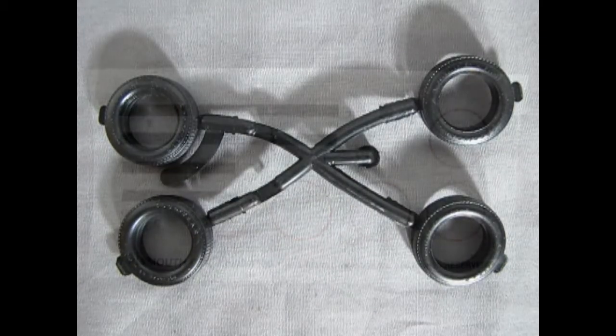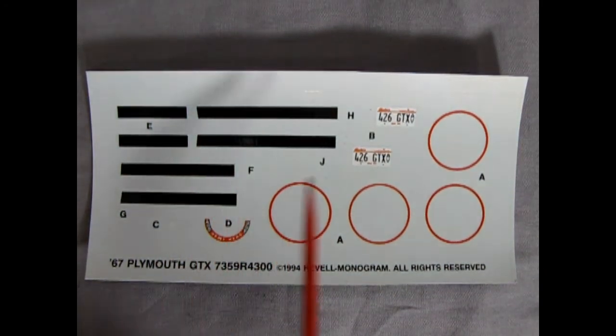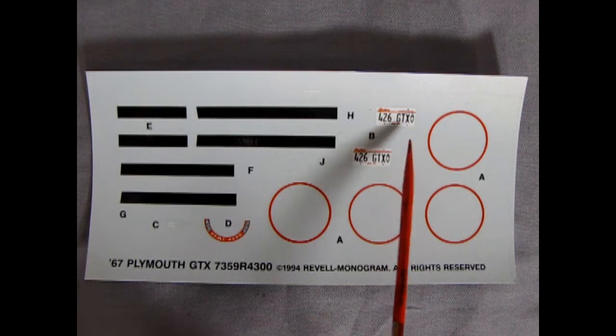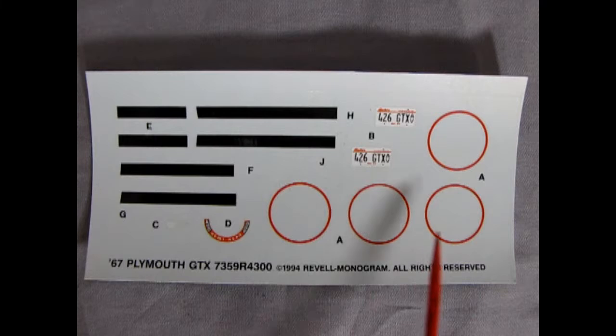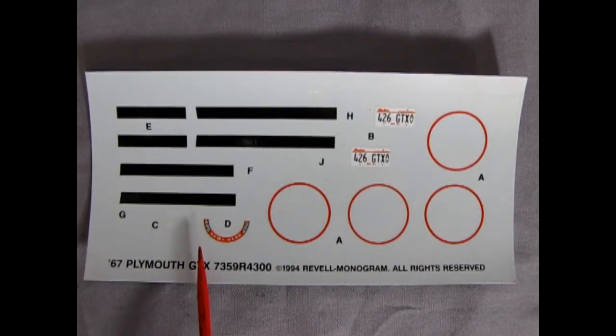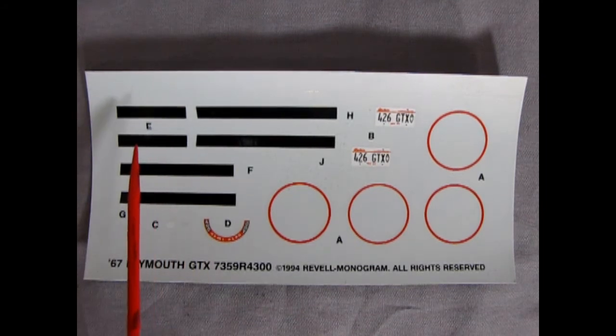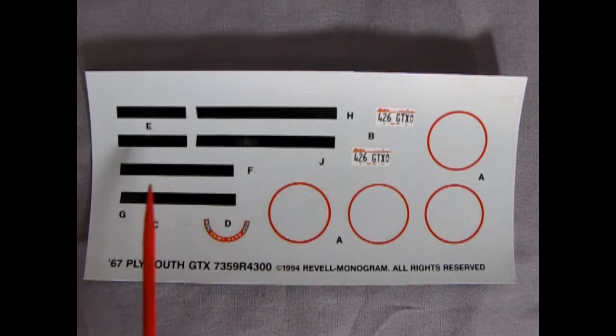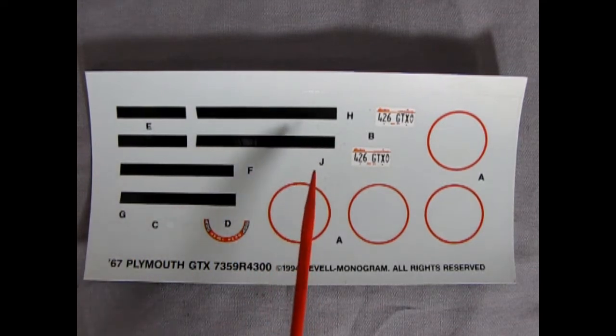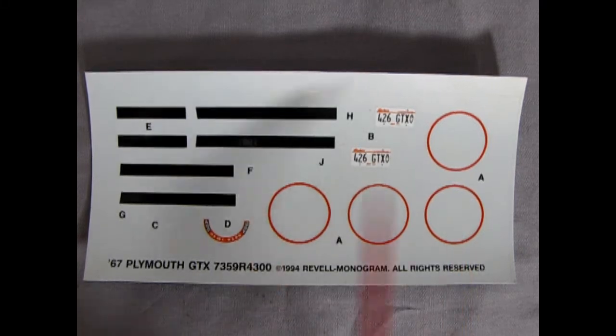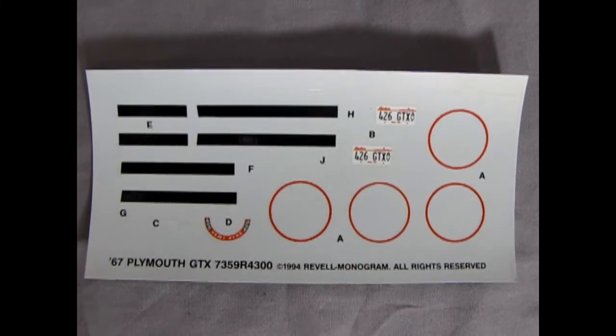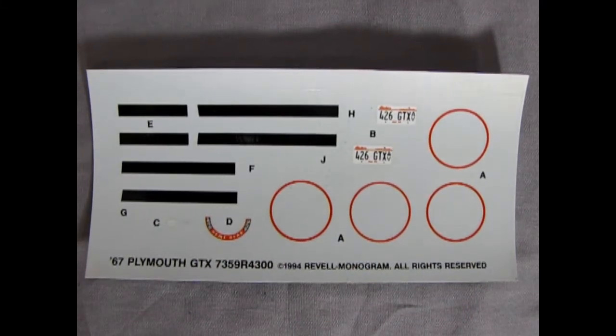Last but not least we have our decal sheet which has some Illinois 426 GTX license plates sitting here, the red walls for the red wall tires, our 426 hemi decal. There's also a little white decal here for an under the hood feature. And last on the sheet is our black stripes for the body and hood. So very simplistic decals very plain but they will give your model that extra little feature that it needs.